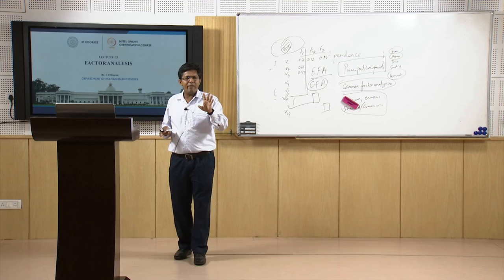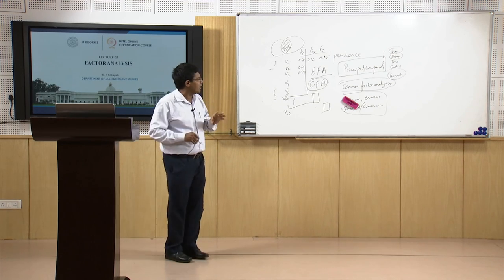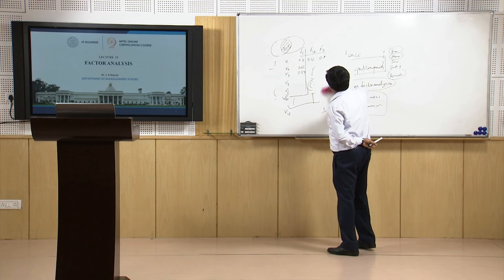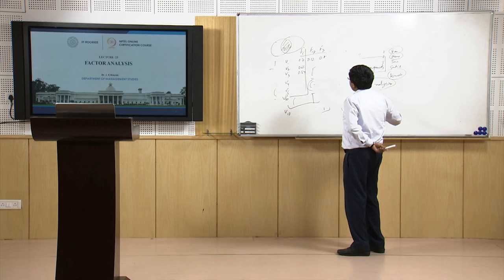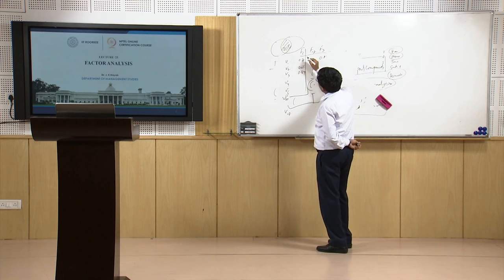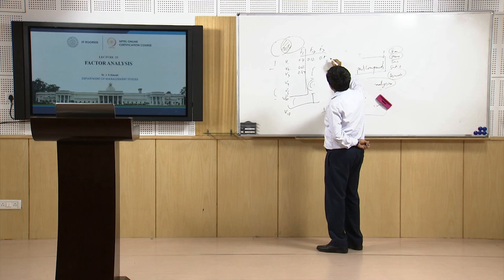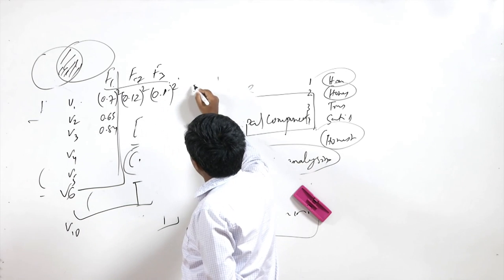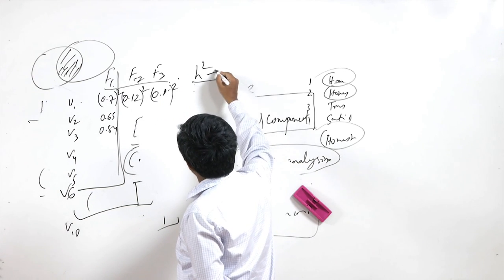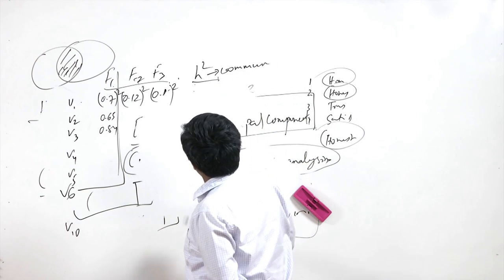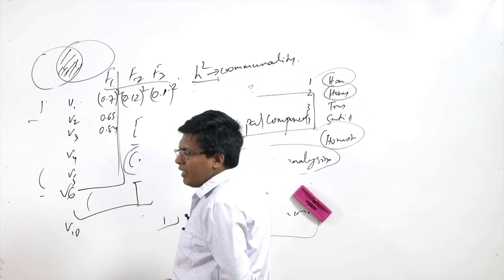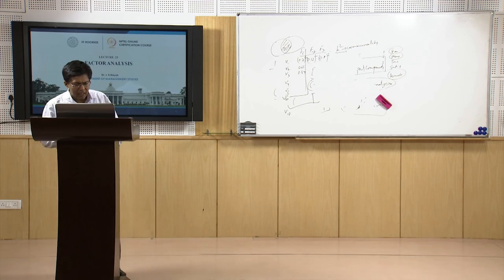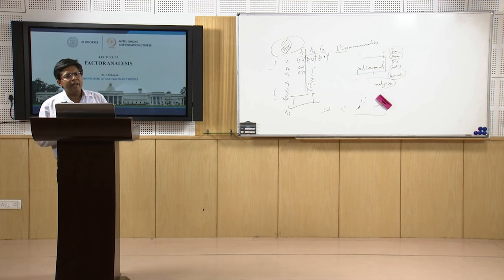Communality is the variable's contribution to each factor — it is the shared variance. The sum of the squared loadings across factors is called communality. If communality is above 0.6, then PCA and common factor analysis do not make a meaningful difference in results.